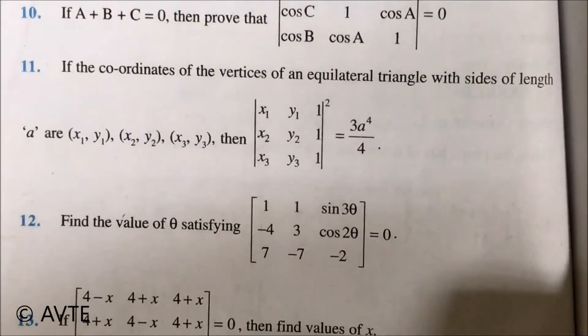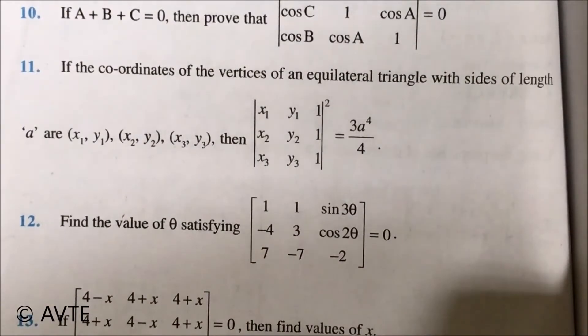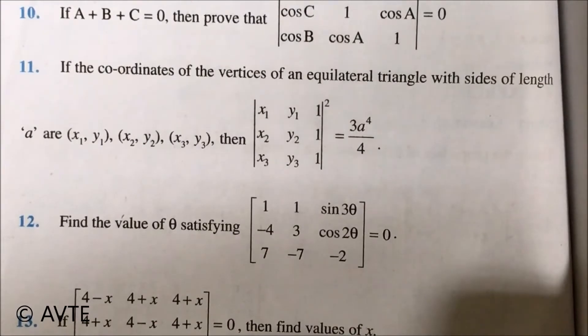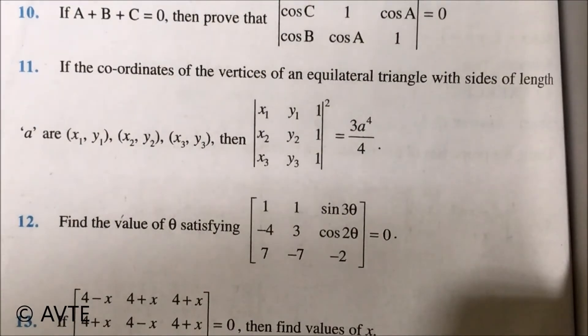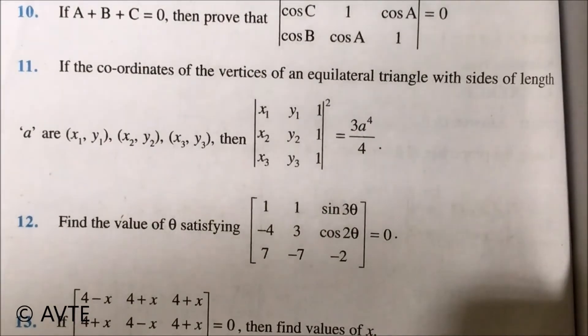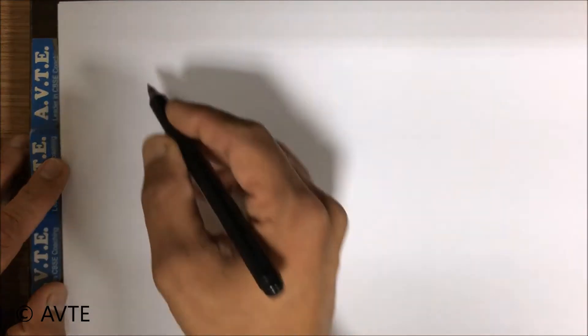You can see question number 11 which says if the coordinates of the vertices of an equilateral triangle with sides of length a are (x₁, y₁), (x₂, y₂), (x₃, y₃), then the square of the given determinant is equal to 3 into a to the power 4 divided by 4. Well, this is a trick question because...